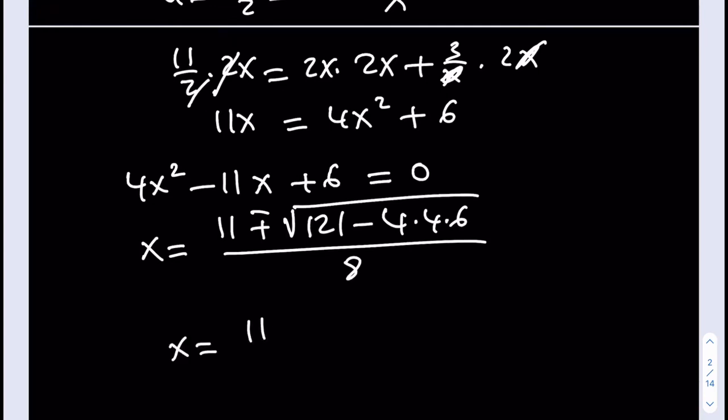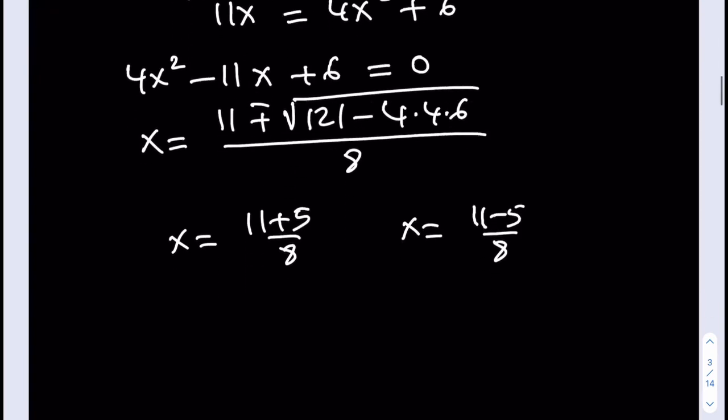So from here, you get x equals 11 plus 5 over 8, and x equals 11 minus 5 over 8. And what does that mean? Well, it means that the first solution is 16 divided by 8, which is equal to 2. So that's my x1.